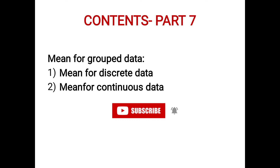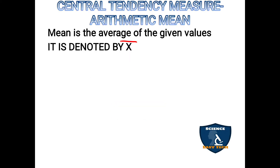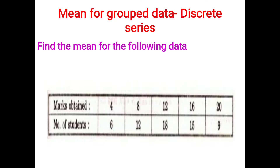Under group data you have two types: discrete data and continuous data. I have already posted a video on how to calculate arithmetic mean for raw data in my Part 6 video — the link is in the description box. Central tendency measure — arithmetic mean — mean is nothing but the average of the given values. It is denoted by x̄ (x bar).